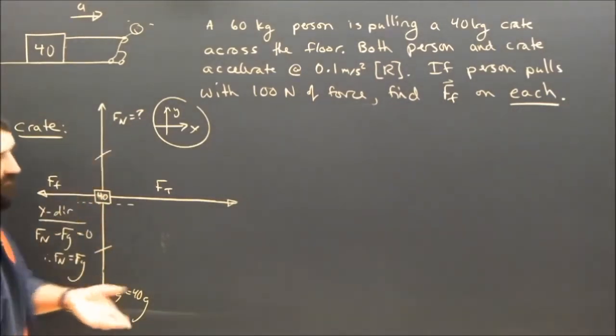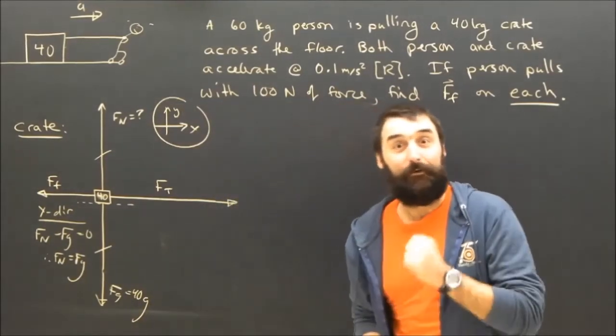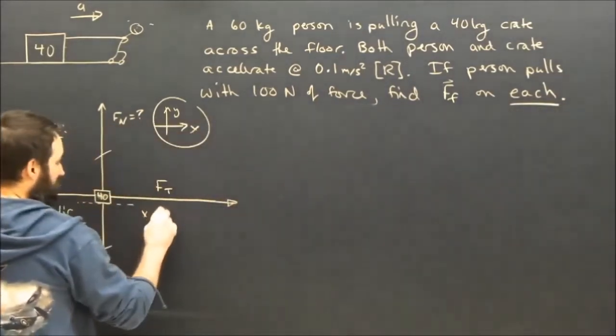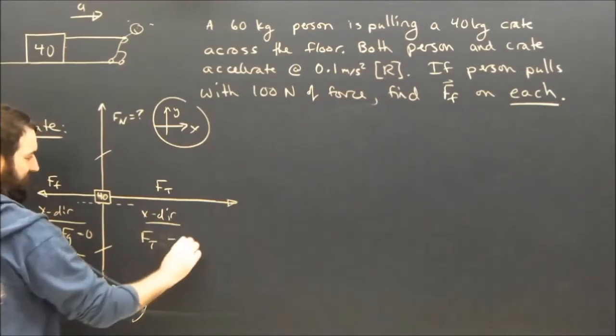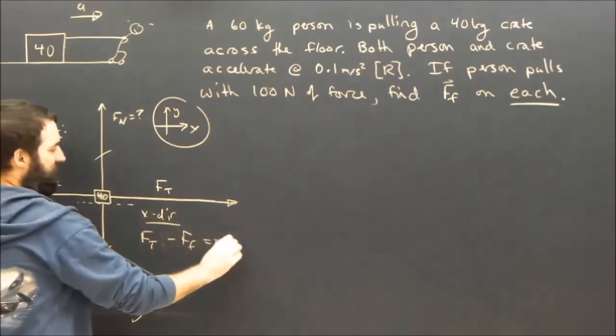Therefore Fn equals Fg, and I can see that, yes, this time Fn does equal Fg. It often does, but not always. Okay, back to the question. That's pretty straightforward. The x-direction equation, then, is going to say that Ft minus Ff has to equal Ma.